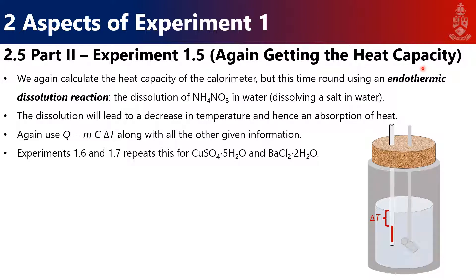This heat capacity should be similar to what you obtained in Experiment 1.1 — it shouldn't be completely different or negative. Always check yourself. You'll repeat this for Experiments 1.6 and 1.7, just for copper sulfate pentahydrate and barium chloride dihydrate.